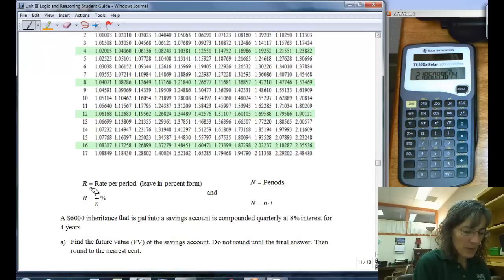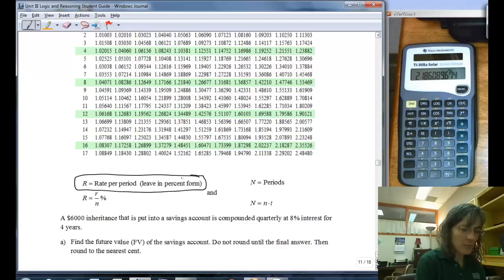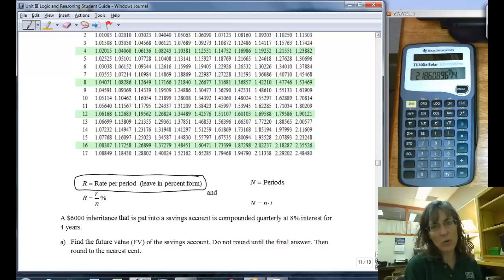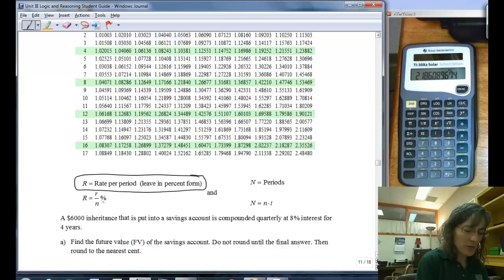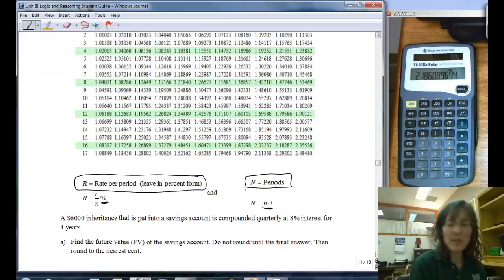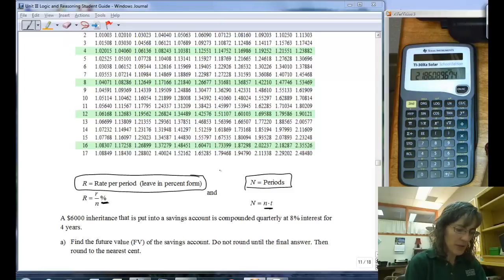The rate for this, we are going to leave in its percent form, that's just a little different than what we did on the last problem where we had to convert it to a decimal. For this table, we're going to leave it as a percent. So it stays in percent form, but it is still r over n. And then the N, the number of periods, we're going to do the n times t, just like I showed you for that exponent part.